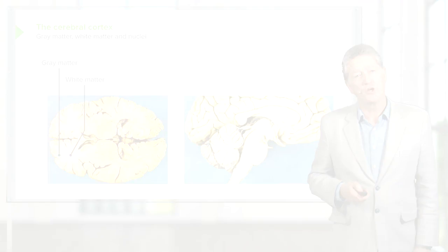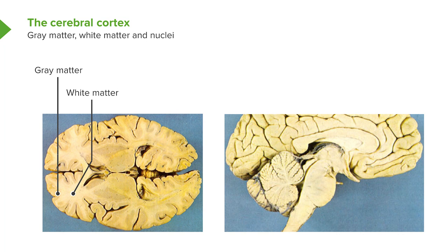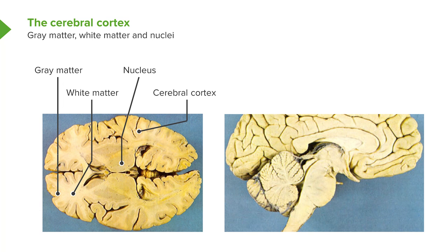The white matter is internal to the grey matter. If you look very carefully in the horizontal section through the brain, you can see some greyish stained components embedded in the centre of the white matter — they are called nuclei. This is a nucleus in the brain called the thalamus. When we refer to the cerebral cortex and also the cerebellar cortex, we really mean the grey matter of the brain.